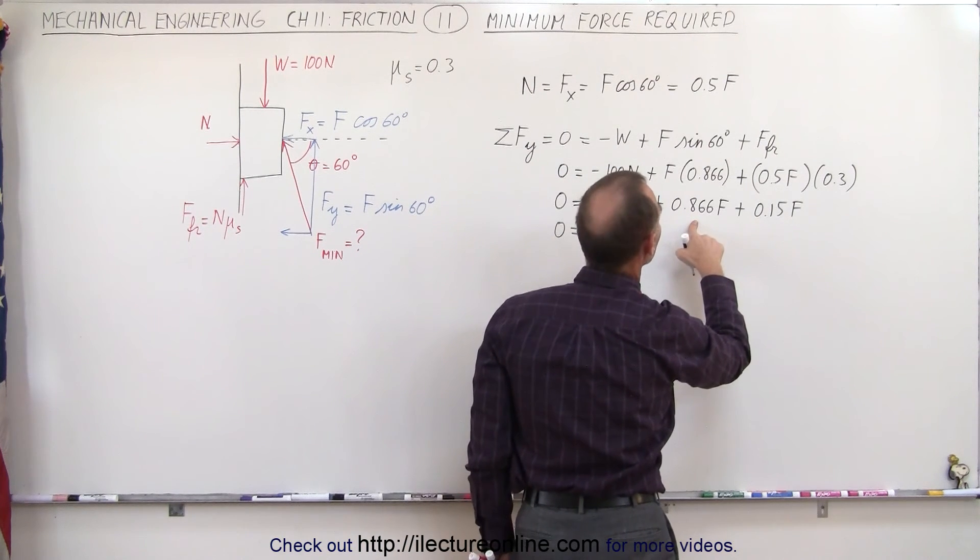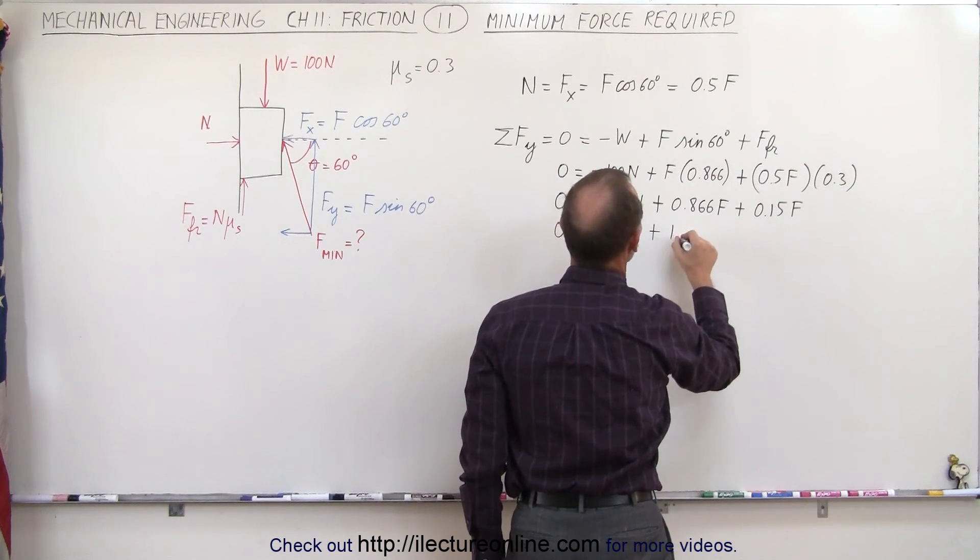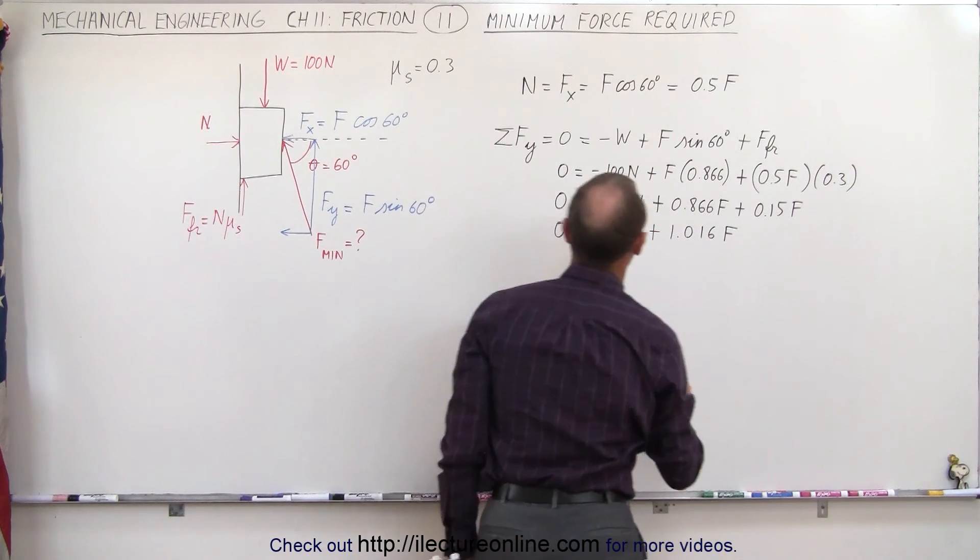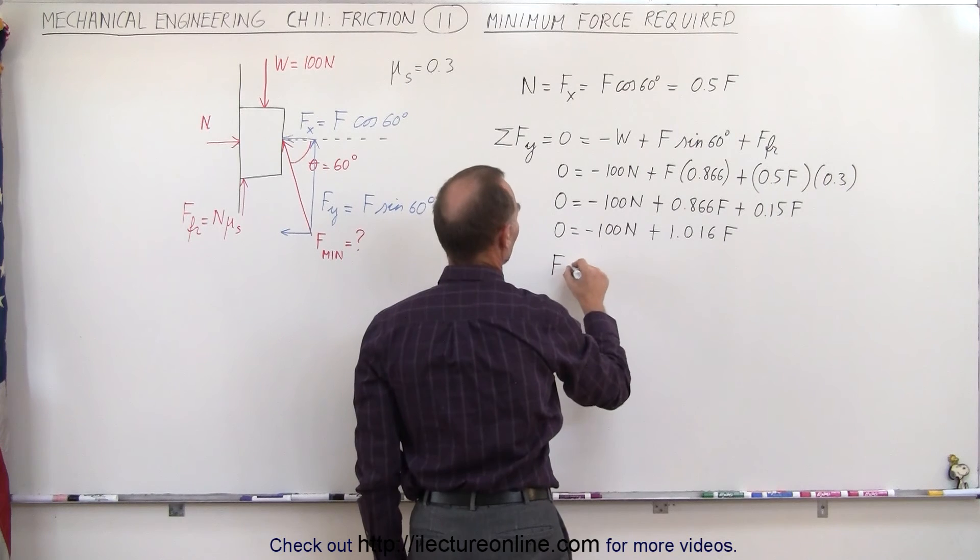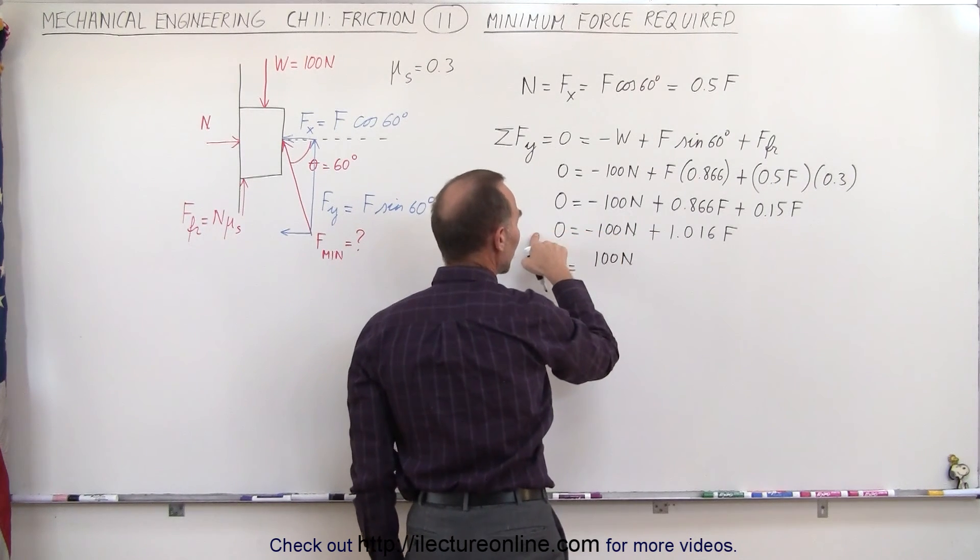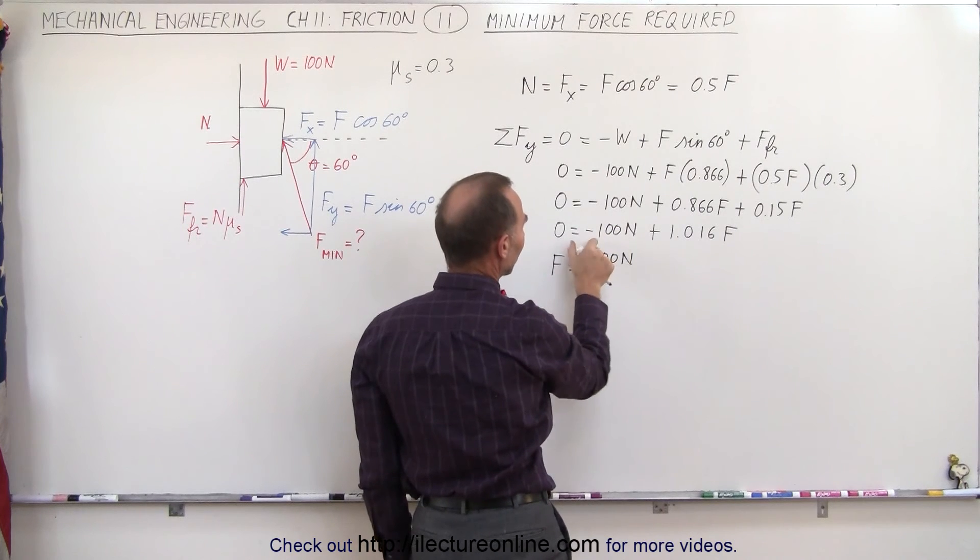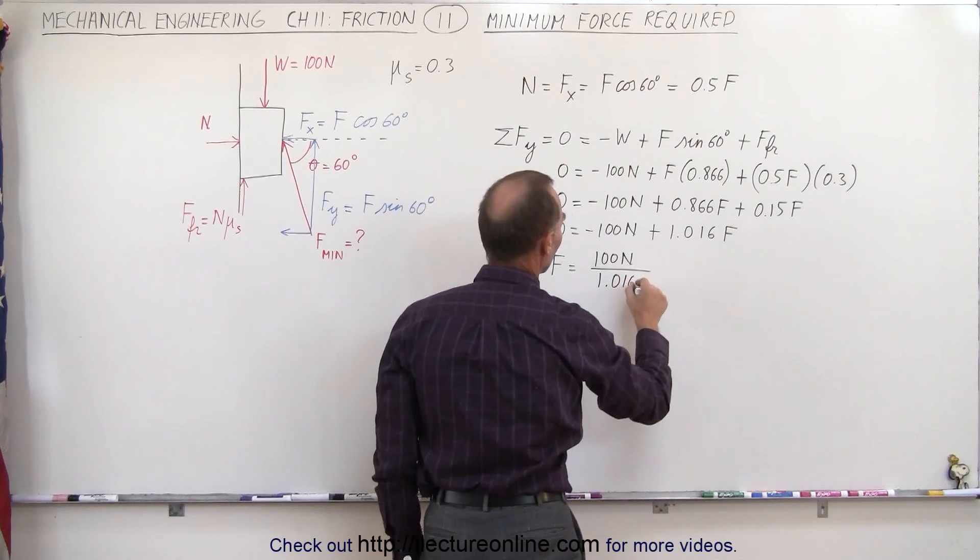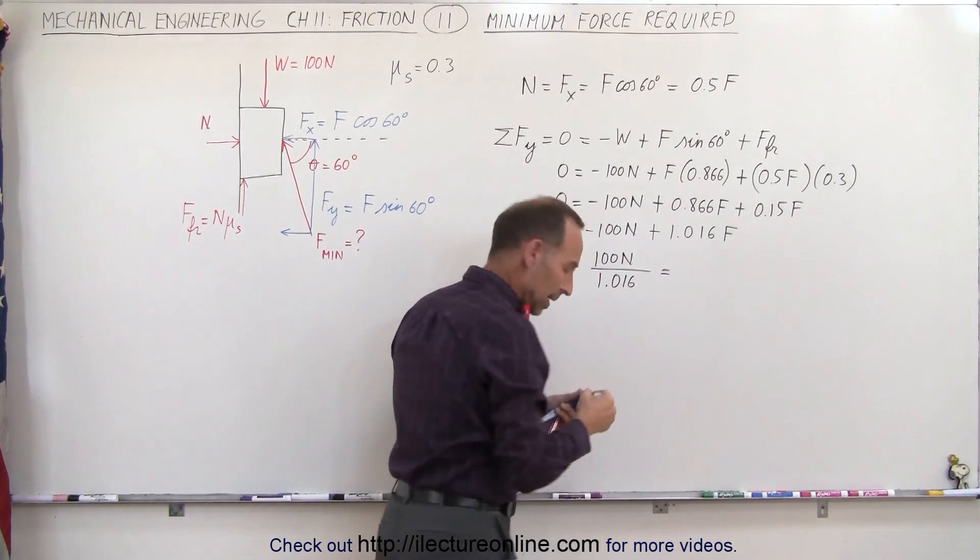And therefore F is going to be equal to 100 newtons. When I bring this across it becomes minus F, multiply both sides by negative 1 to get rid of the negatives, and divide that by the coefficient of F, which is 1.016.